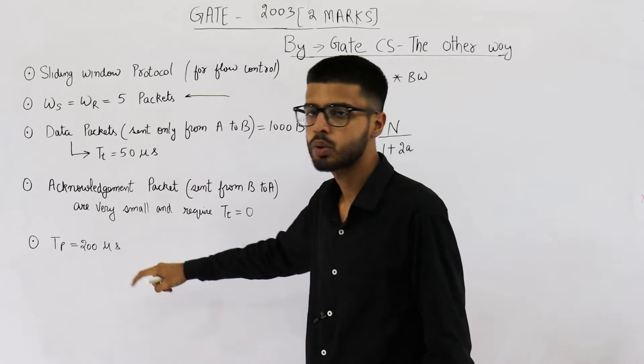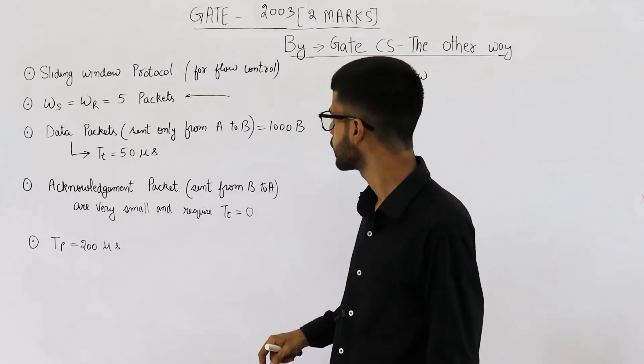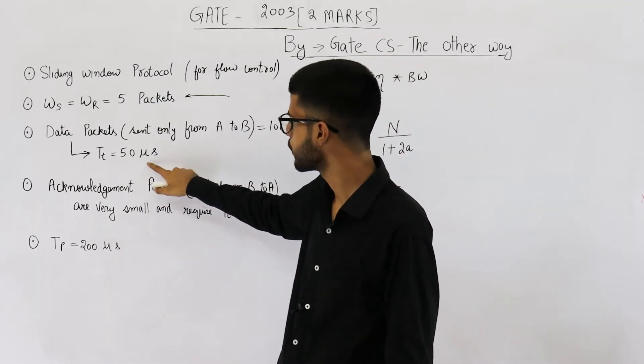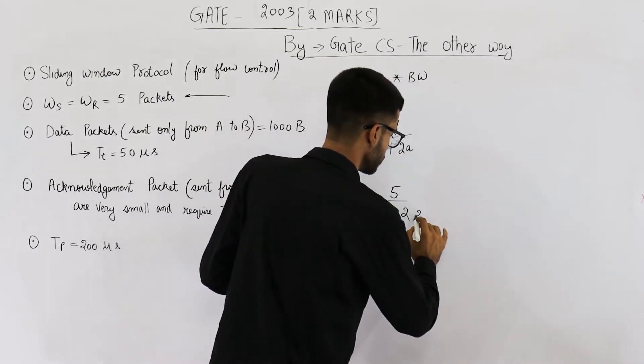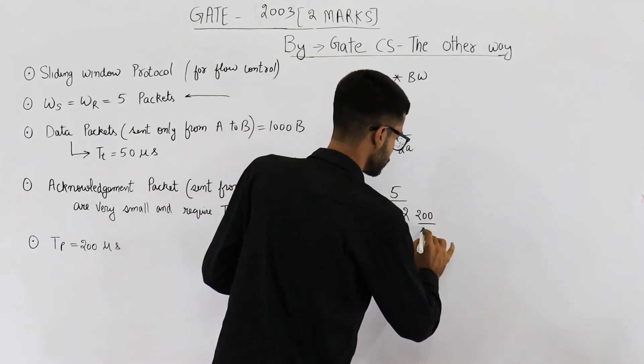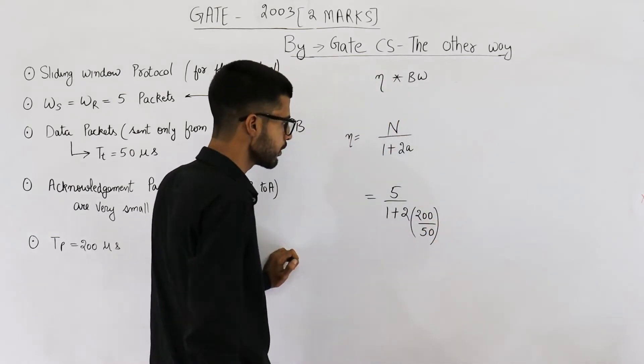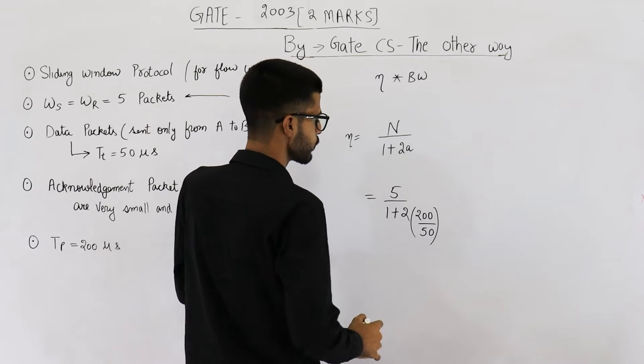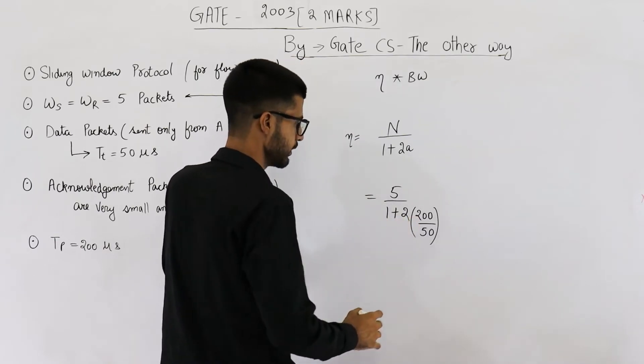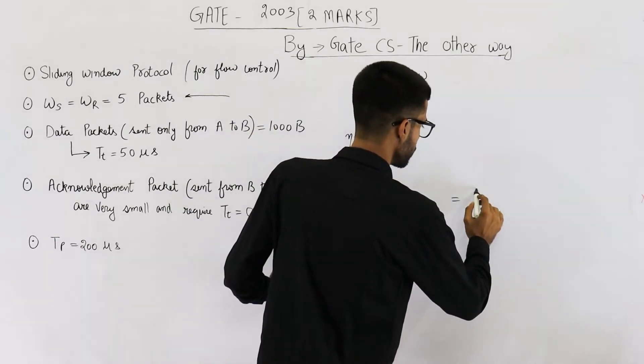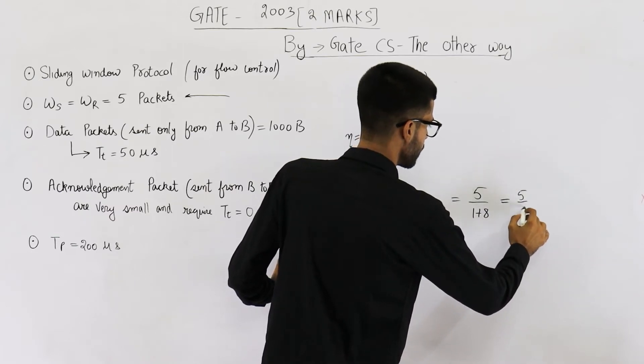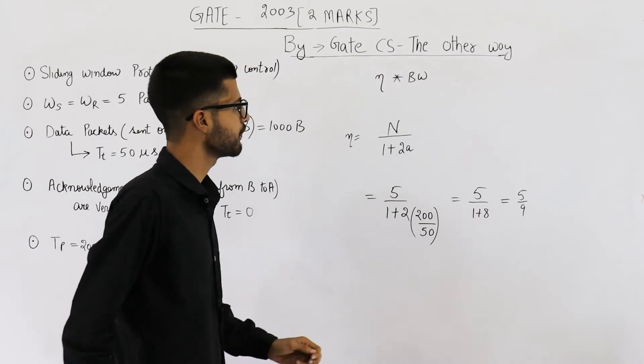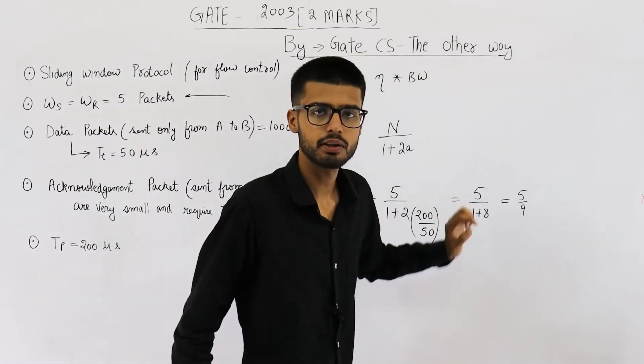Propagation time is 200 microseconds and transmission time is given as 50 microseconds. So it is 200 divided by 50. So this is 5 forza and 4 into 2 is 8. So this comes out to be 5 upon 1 plus 8 which is equal to 5 upon 9. So efficiency is 5 upon 9.